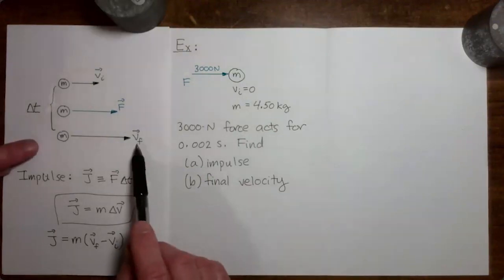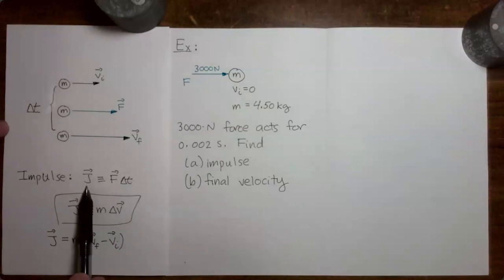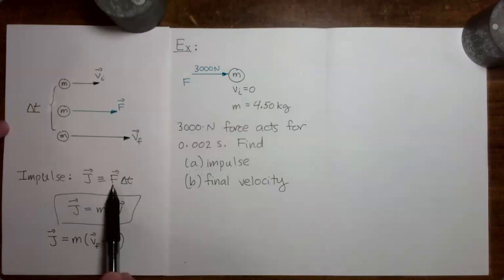With this scenario in mind, we defined the impulse that acted on the mass to be the product of the force that acted on the mass multiplied by the time interval for which the force acted.